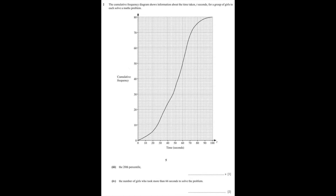In part 3, we have to use the cumulative frequency diagram to find the 20th percentile. You take the total frequency — 80 — and multiply by 20%. If it said the 30th percentile, you would multiply by 30%, and so on. When you find 20% of 80, you get 16. Find the value 16 along the vertical axis — each little square along the vertical axis equals one unit, so six squares above 10 gives you 16. Travel towards your graph, and when you hit the graph, travel down and read off the corresponding value along the horizontal axis, which is 32 seconds.